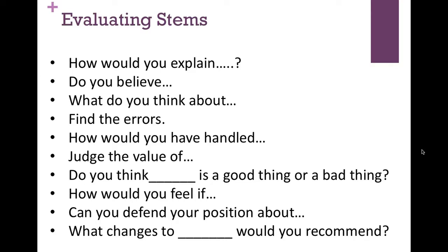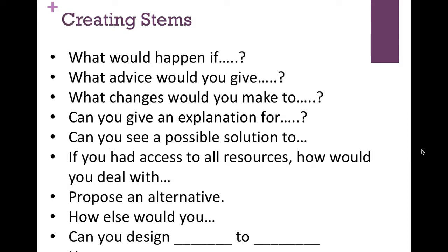Those are evaluating stems you might use in general questions. When it comes to creating, you might ask: could you see a possible solution? Students have to come up with a solution to something that doesn't have an obvious answer. For example, if you ask them to see a possible solution to world peace, there is no one answer — students would have to create an idea of what that might look like.